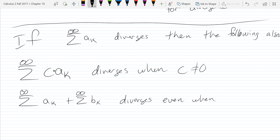So this next one, sum of a divergent plus any other series is going to be divergent. Even when AK, even when BK equals negative AK. So even if they would be the exact opposite in sine, it still would diverge.